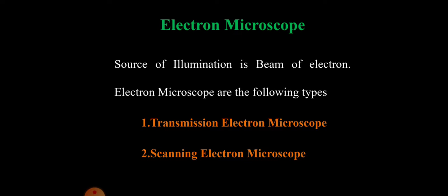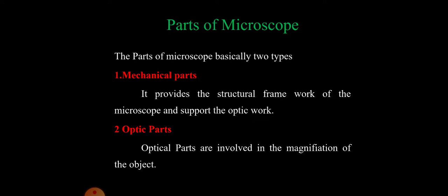The next thing is parts of microscope. The parts of microscope are basically two types: one is mechanical parts, another one is optical parts. The mechanical parts and optical parts are involved in the magnification of the object.